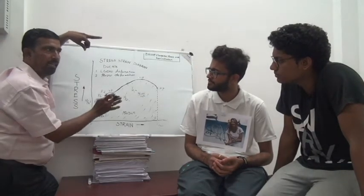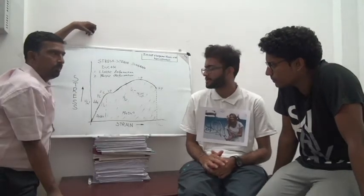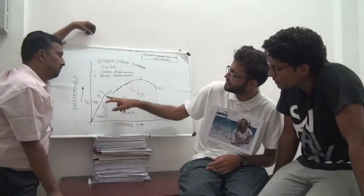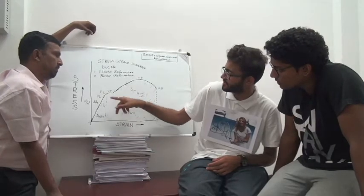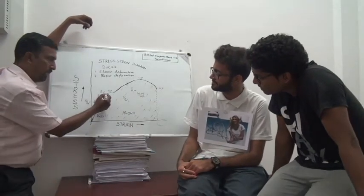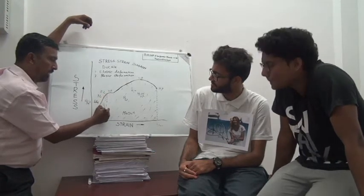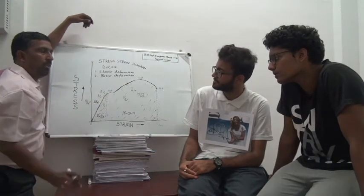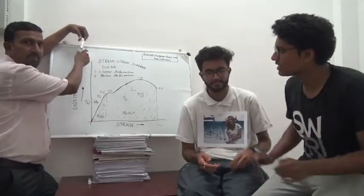The area under the curve up to fracture is the Modulus of Toughness — not directly toughness, but Modulus of Toughness. You have drawn an area here also — up to elastic limit. The area under the curve up to elastic limit is the Modulus of Resilience. It is useful in spring materials.